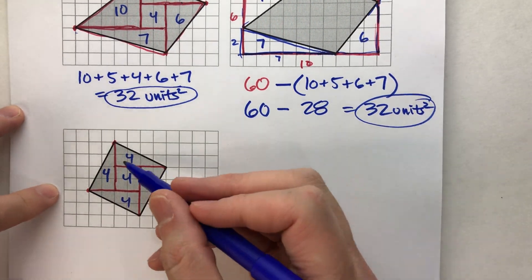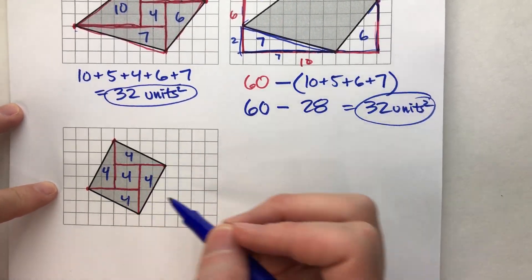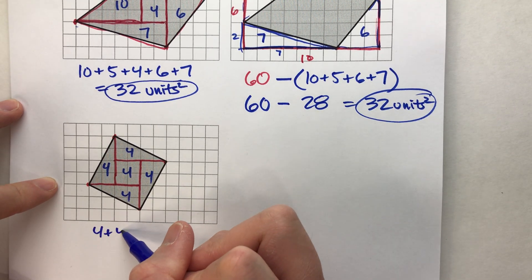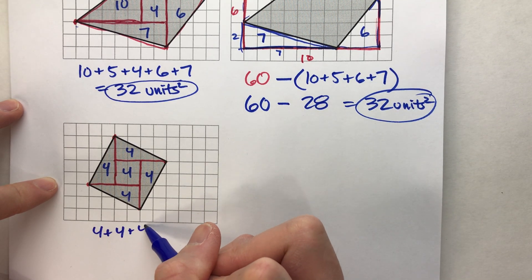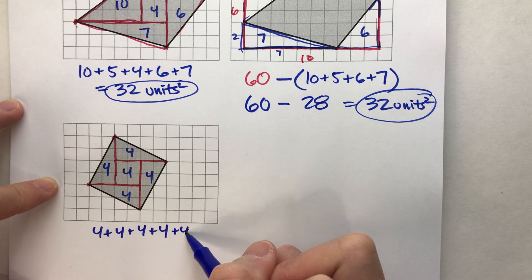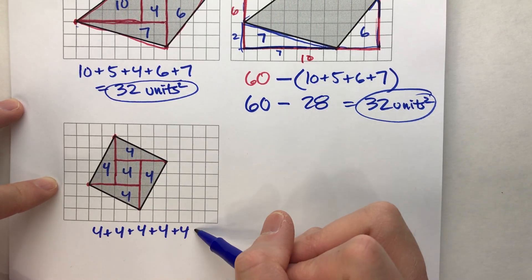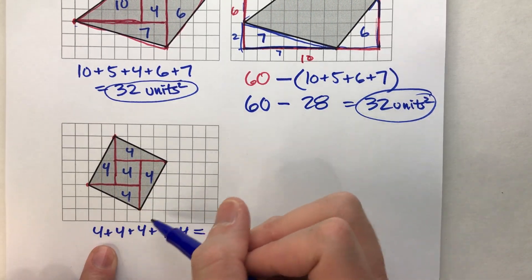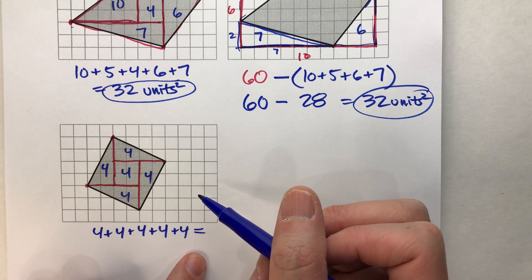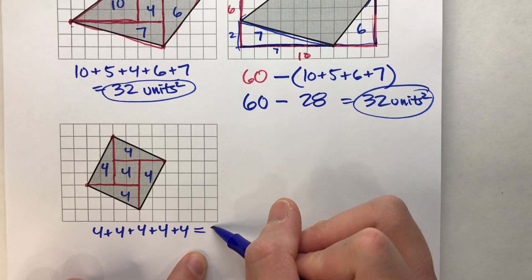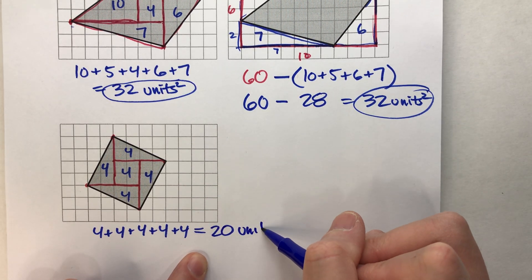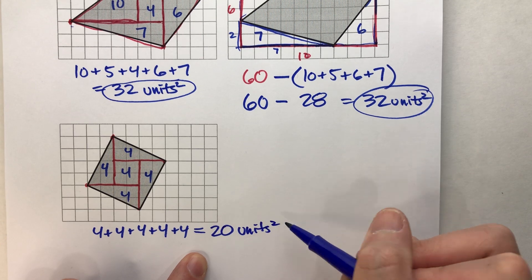And the bottom triangle is 4 times 2 divided by 2, which is also 4. So the area of this tilted square is 4 plus 4 plus 4 plus 4 plus 4 — that's five 4s. 4 times 5 is 20. So this is 20 square units.